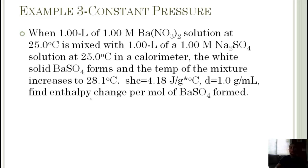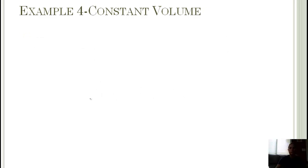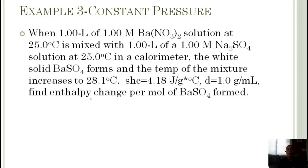Let's look at some calorimetry problems. We're going to look at one with constant pressure and then one with constant volume. For constant pressure, we've got one liter of one molar barium nitrate at 25°C mixed with one liter of one molar sodium sulfate at 25°C in a calorimeter. We're mixing these two things together. We form a white solid of barium sulfate, and the temperature of the mixture goes up from 25 to 28.1°C. They're giving us the heat capacity, the density of the solution, and we want to find the enthalpy change per mole, or basically the heat per mole.